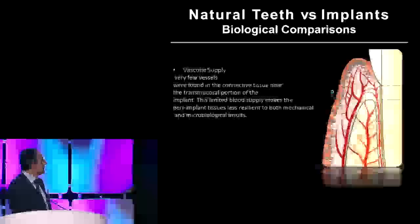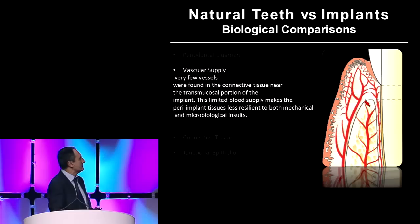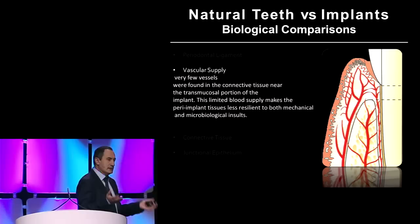Vascular supply — that's a big one as well, because as you can see here, around the tooth you have three ways of vasculature: the PDL, the periosteum, and then intramarrow. Now, all this creates an area where you have plenty of blood supply, and with blood supply come the cells to fight infection — PMNs, etc.